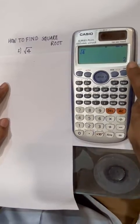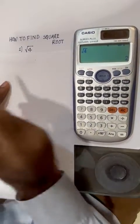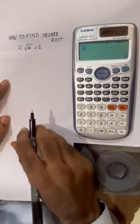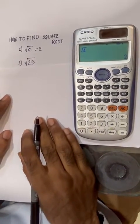We get the answer 2. Square root of 4 equals 2. Now we'll take another simple example.